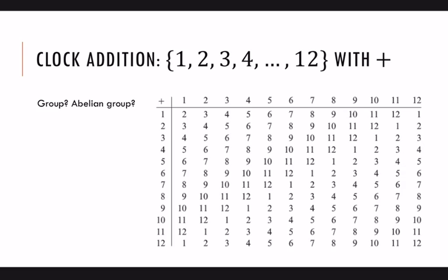First of all, closure. Look through all of the different answers that you're getting and see if you are only getting answers 1 through 12, just integers 1 through 12. And we are. So this is a closed system.